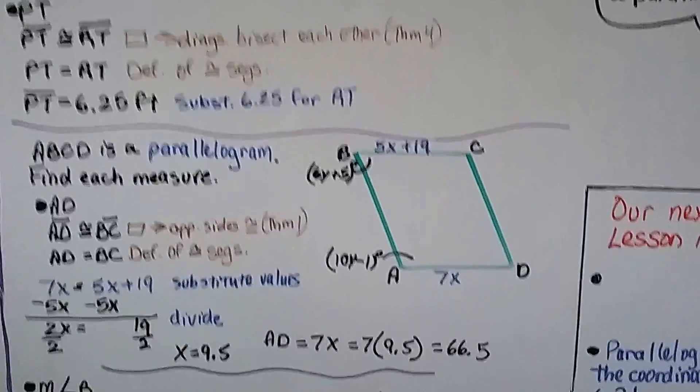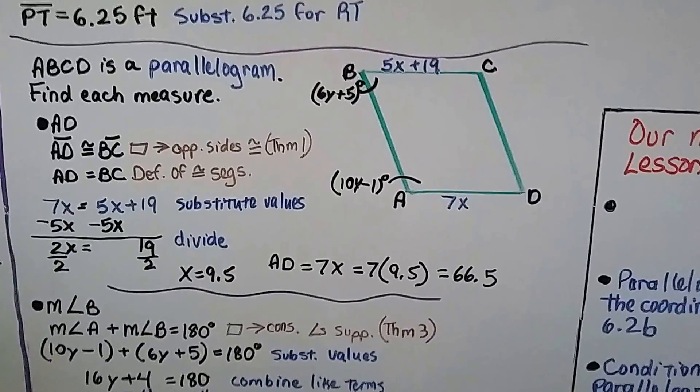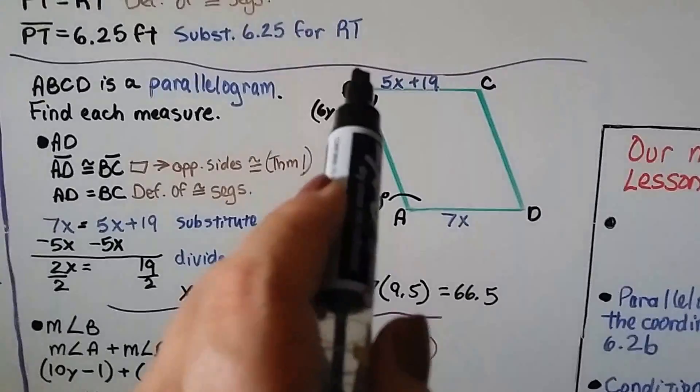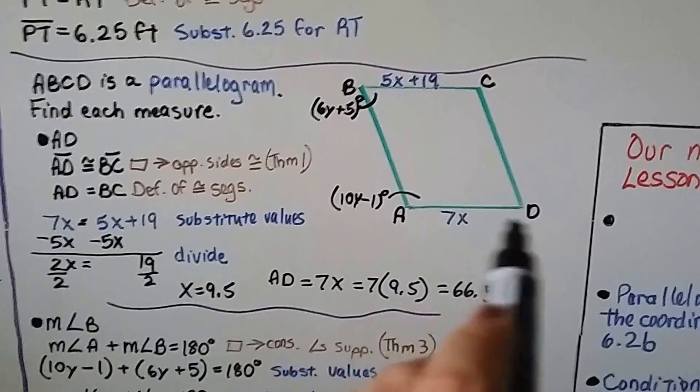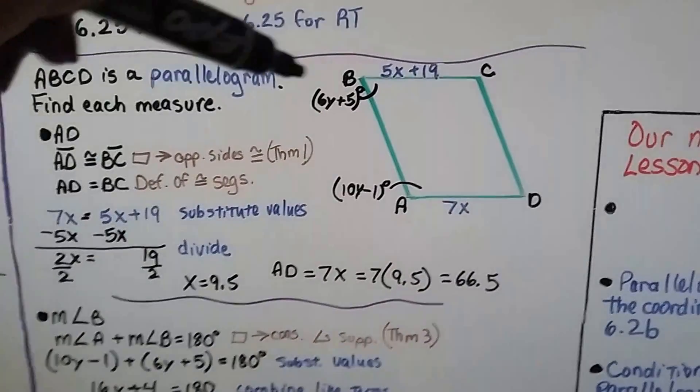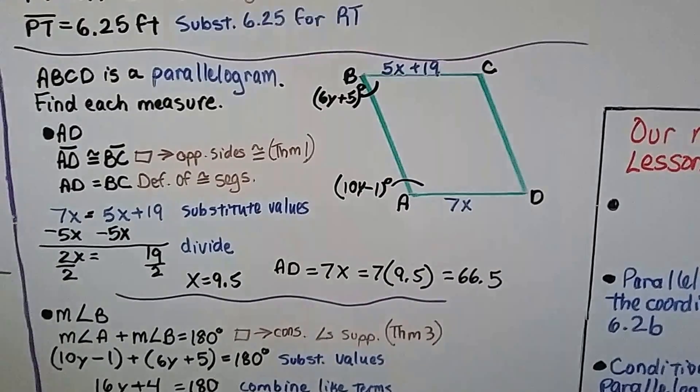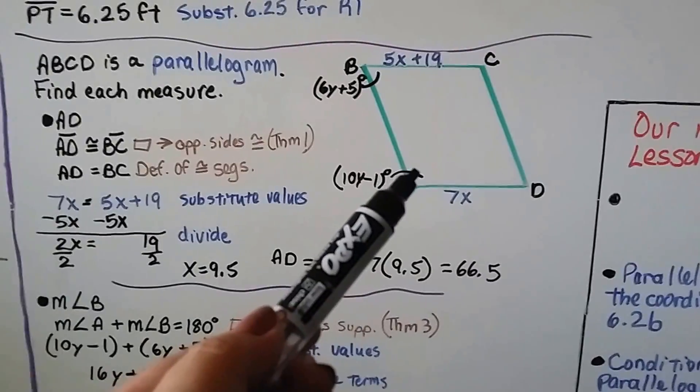We've got one more. Take a look at this parallelogram. We've got ABCD is a parallelogram. Side BC is 5x plus 19. Side AD is 7x. Angle B is 6y plus 5, and angle A is 10y minus 1.